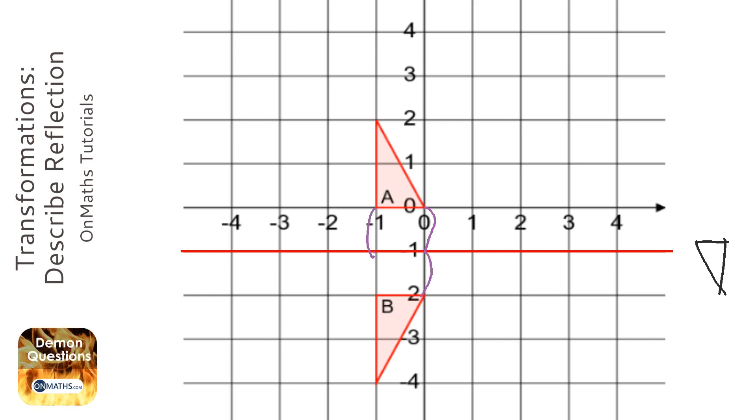One away here and then one away on the other side. And then this top one is one, two, three away from the mirror, one, two, three away from the mirror. So the mirror line is perfect.